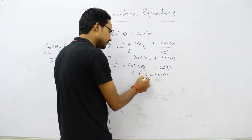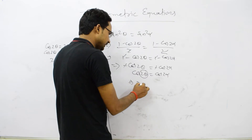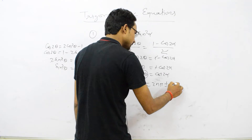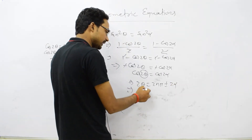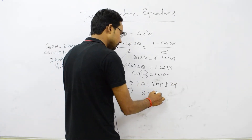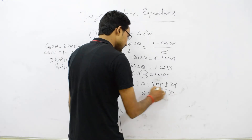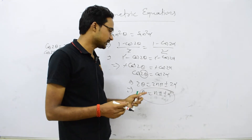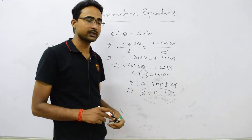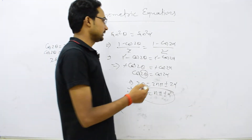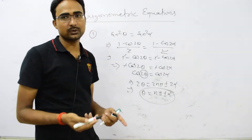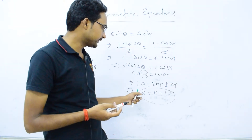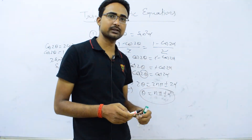Here θ is 2θ and α is 2α, so 2θ = 2nπ ± 2α. Dividing both sides by 2, we get θ = nπ ± α. So when sin²θ = sin²α, the general solution is θ = nπ ± α. Similarly, for cos²θ = cos²α and tan²θ = tan²α, in all cases we get θ = nπ ± α.